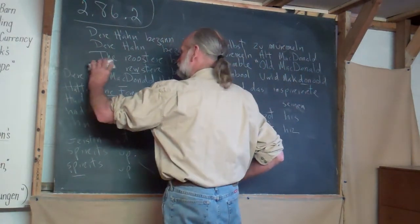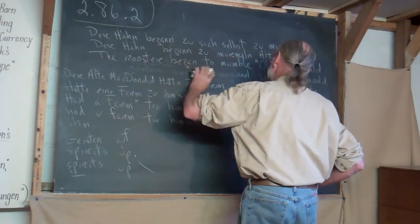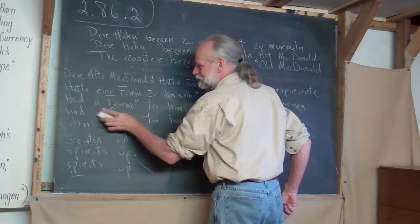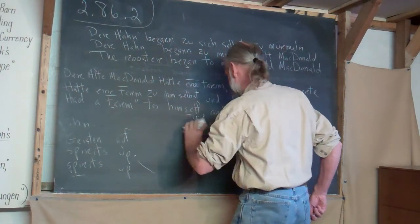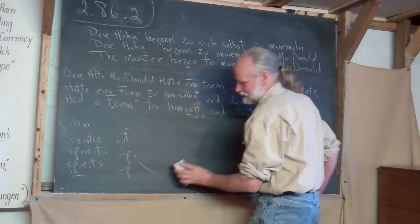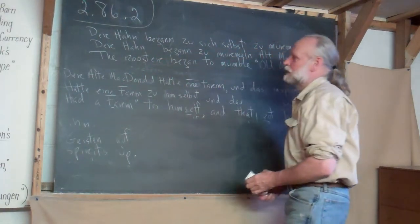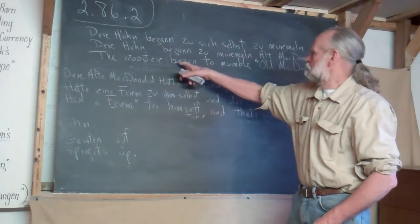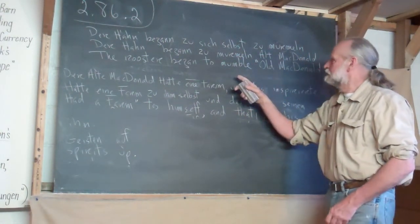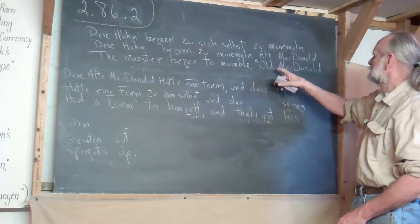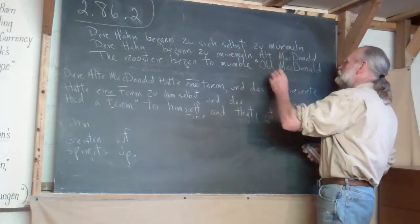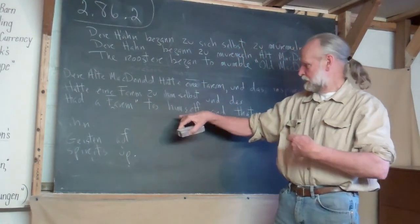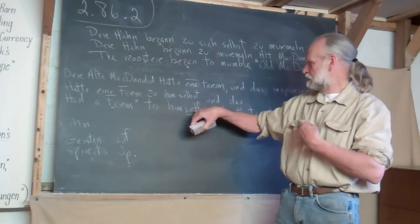Now, let me get rid of that, for the sake of clarity, to the extent that I can make this clear. And now, let's look at bad German, word by word. So, der Hahn, der Hahn begann zu murmeln, alt, maybe it's alte, alt Mac Donald hatte eine farm, zu ihm, ihm, selbst.